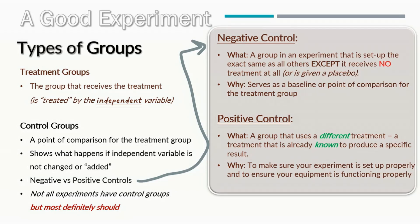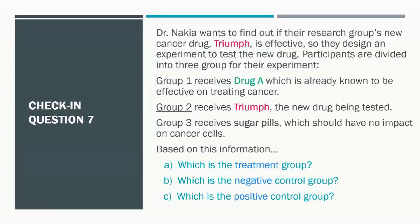Let's apply this now with check-in number seven. Dr. Nakia wants to find out if their research group's new cancer drug, Triumph, is effective. They design an experiment to test the new drug. Participants are divided into three groups: Group 1 receives Drug A, which is already known to be effective at treating cancer. Group 2 receives Triumph, the new drug being tested. Group 3 receives sugar pills, which should not have any impact on cancer cells.